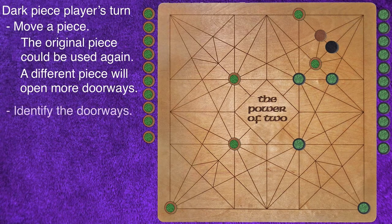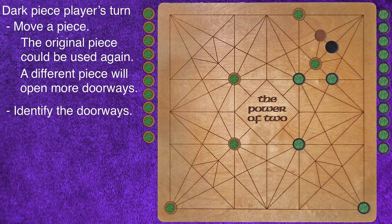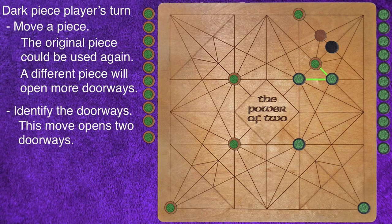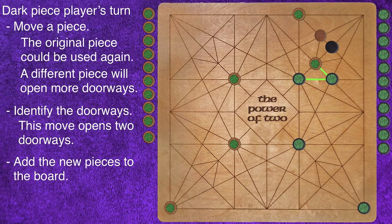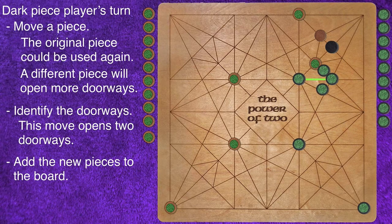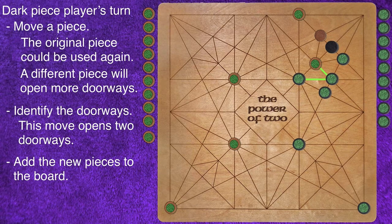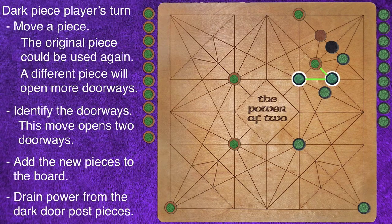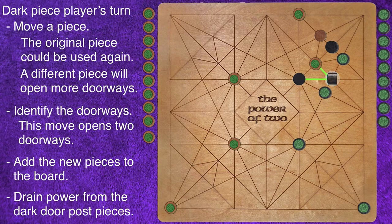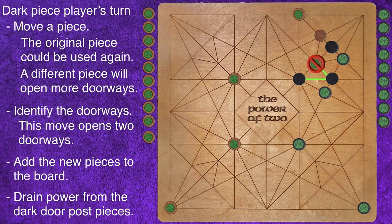Now we identify the doorways and find that this move has opened two doorways. The new pieces are placed on the doorways, then moved to their final position. Finally, one power is drained from the player's pieces that were used as doorposts. Remember, pieces belonging to the other player are not affected.